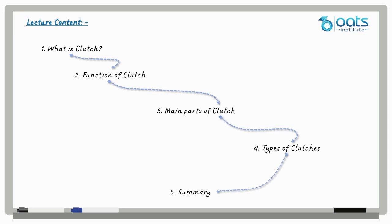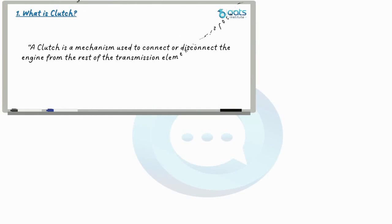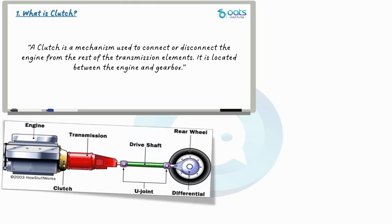So, let's get started with the first topic, what is clutch? A clutch is a vital component that enables the engine to connect or disconnect from the rest of the transmission element. Take a look at this figure. You can see that the clutch is situated between the engine and the gearbox. It remains engaged during normal running and stationary positions.